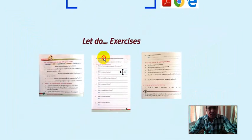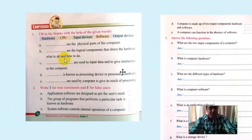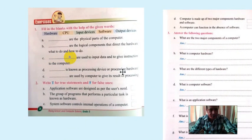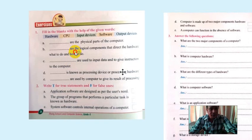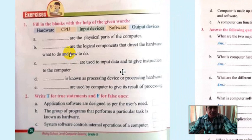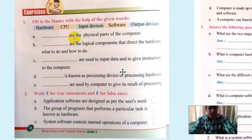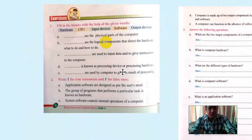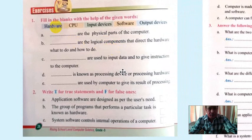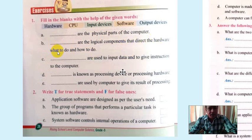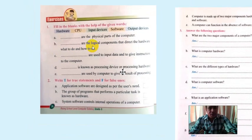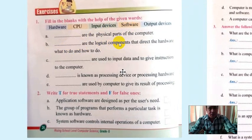This chapter is very easy — only a few things you need to know. Now let's go to the exercises. For fill in the blanks: the physical part of the computer is hardware — hardware is the physical part of the computer. The logical components that direct the hardware what to do and how to do it is software.